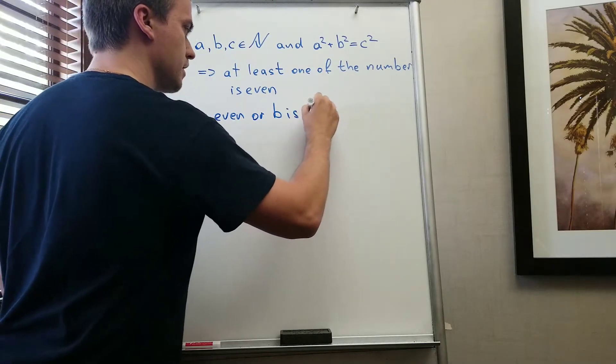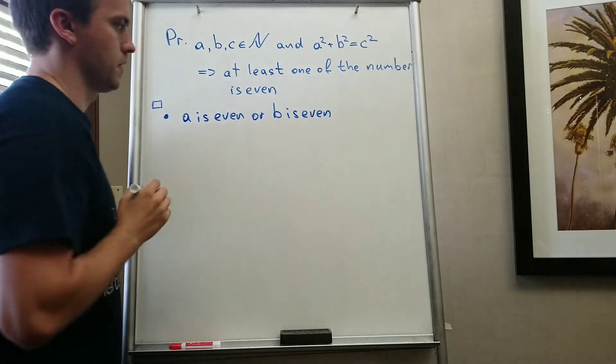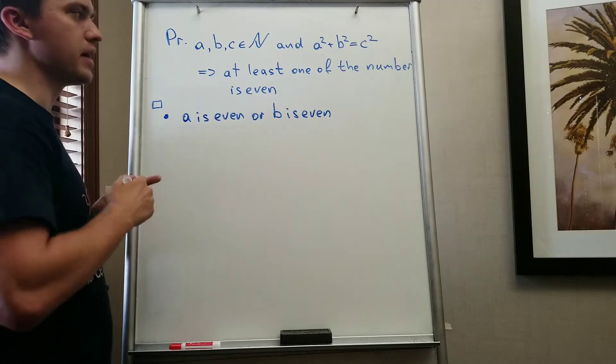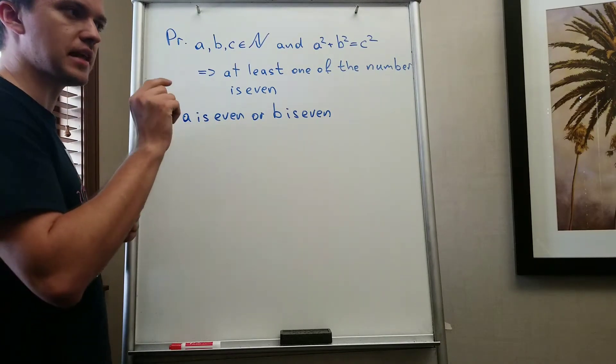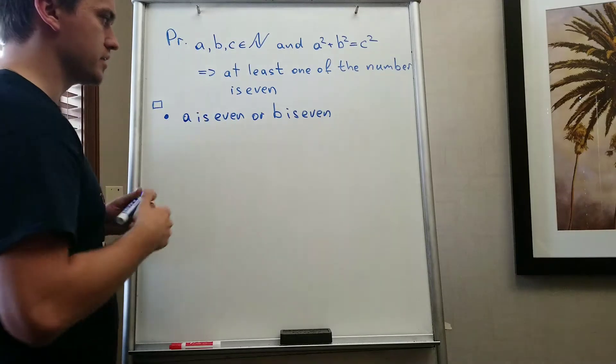b is even. You can also do a and c or b and c, the proof is going to be slightly different, but the idea stays the same.